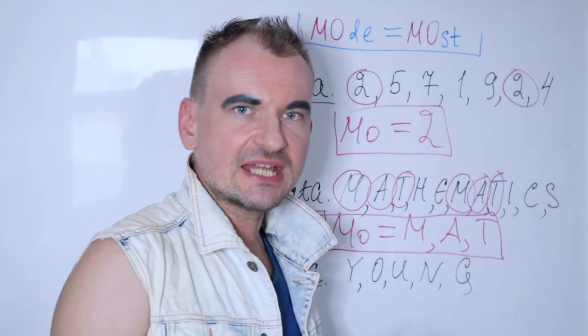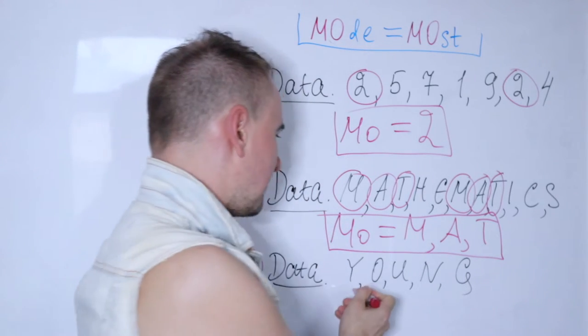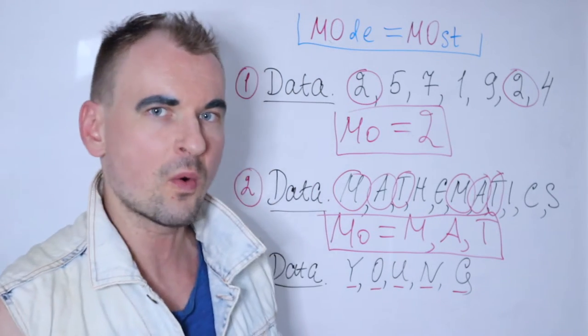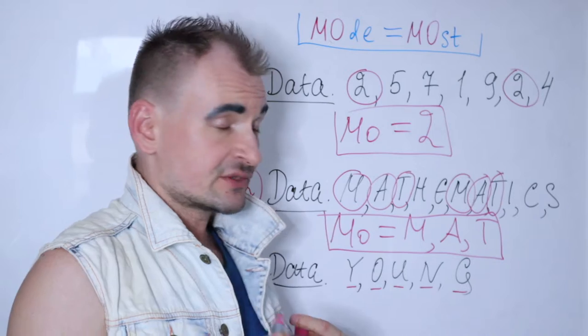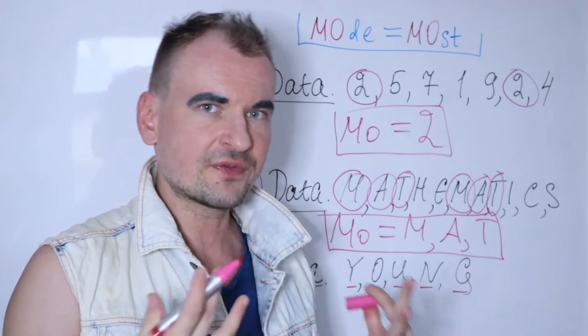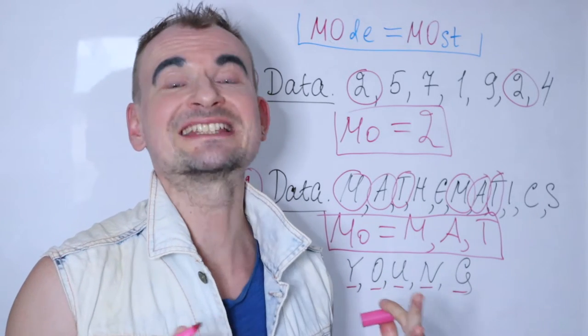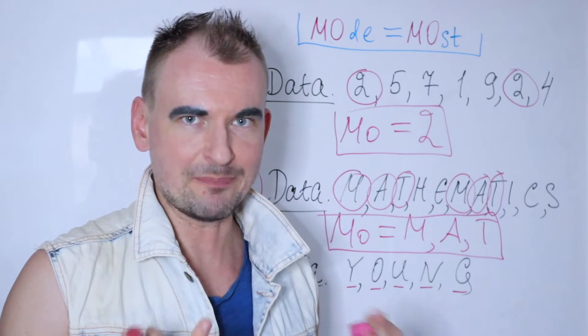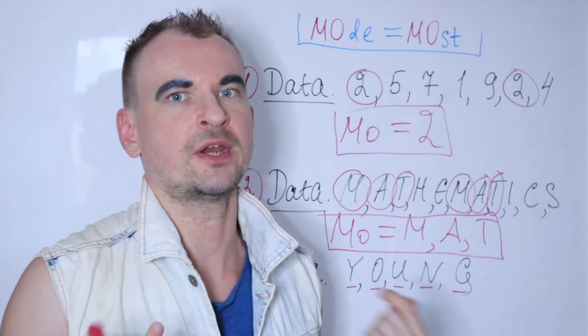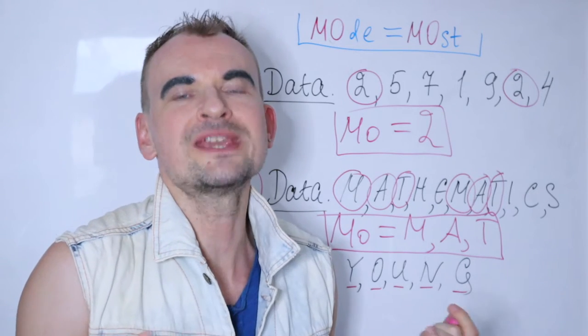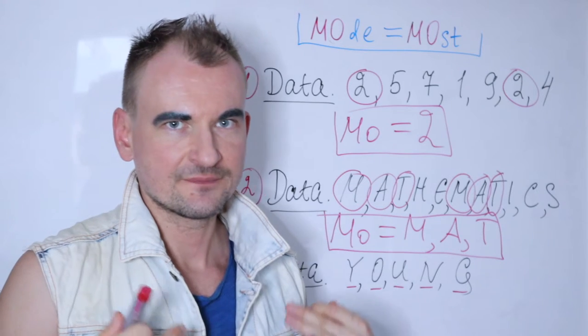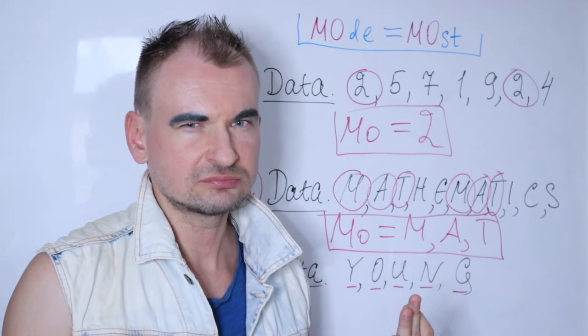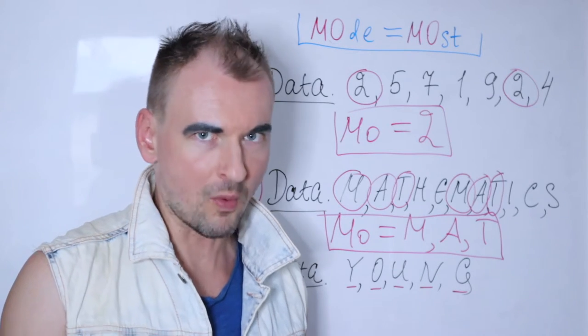If you look at these letters, all of them are completely different from each other. You have Y, O, U, N, and G. All letters are different. So what does it mean? If you ask yourself what letter appears most frequently, they're all equal.